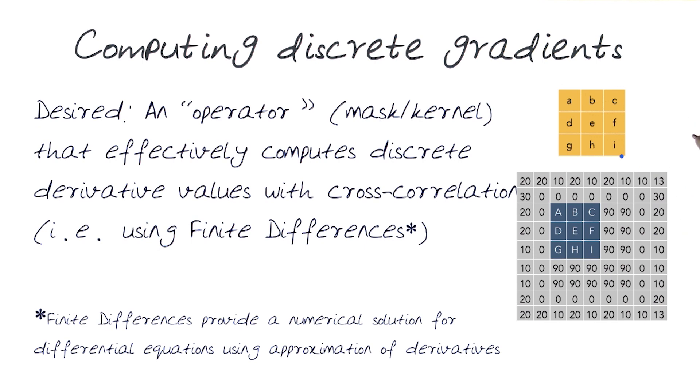I've been talking about this concept of finite difference, which is basically a numerical solution where we solve a differential equation using an approximation of derivatives. In this case, we come up with differences from one column to the other, or one row to the other.